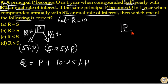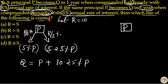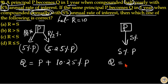Now, for the second scenario: the same principal P becomes Q in one year when compounded annually with S percentage annual rate of interest. Since it is compounded annually, at the end of one year S percentage of the principal is added. So the amount generated at the end of one year equals principal plus S percentage of principal.